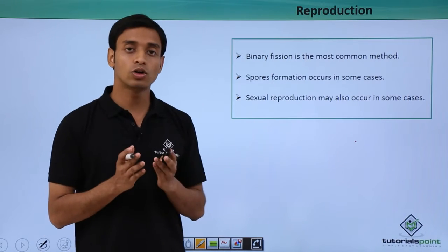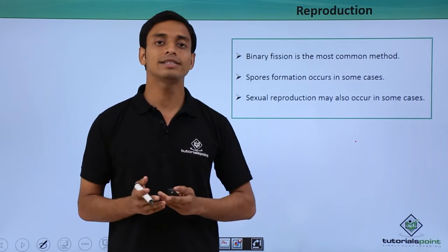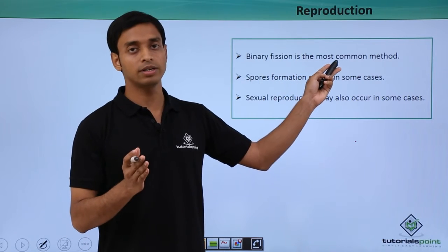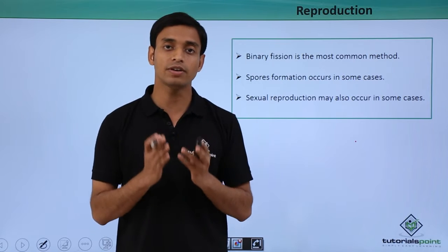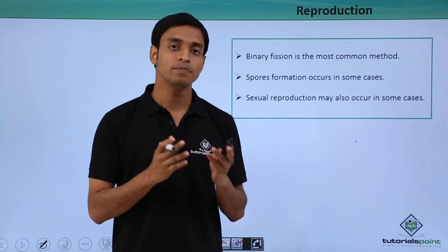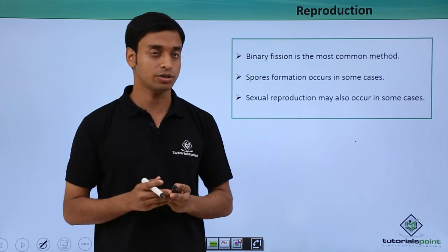Now let's look at the modes or types of reproduction followed by chrysophytes. Binary fission is the most common method. They reproduce through binary fission, but only under favorable conditions. When conditions are favorable, they can reproduce asexually through binary fission.